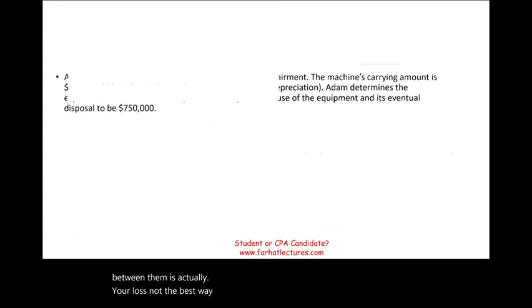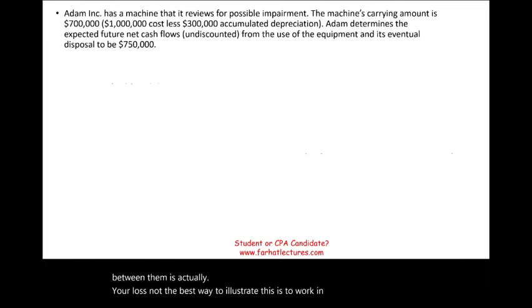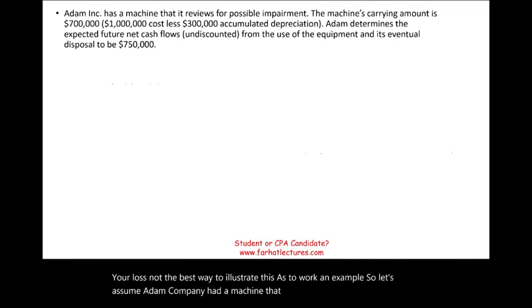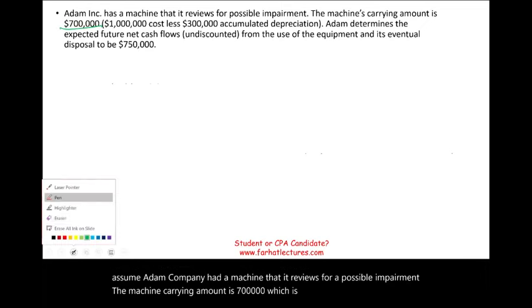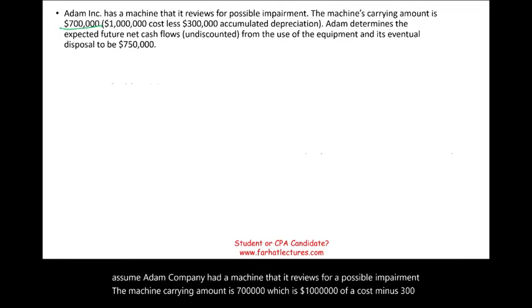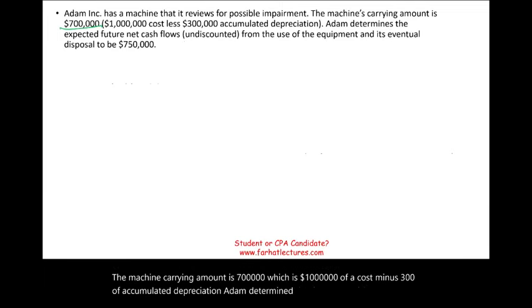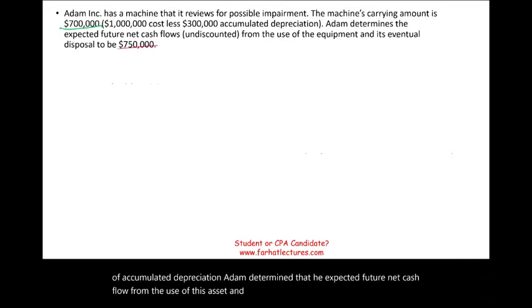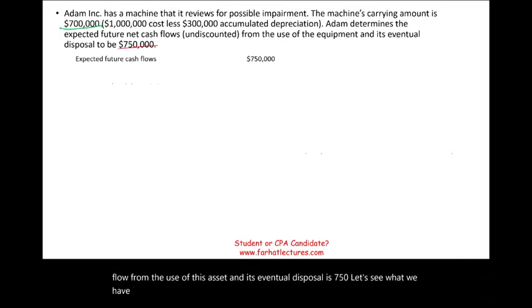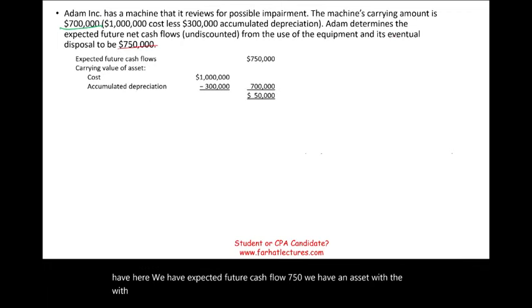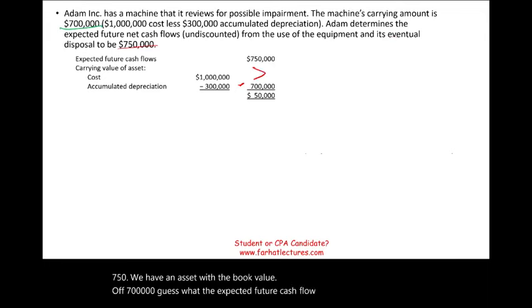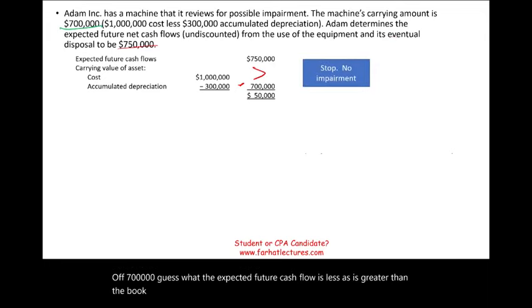Let's work an example. Atom Company has a machine with a carrying amount of $700,000 (cost of $1,000,000 minus $300,000 accumulated depreciation). The expected future net cash flows are $750,000. Since $750,000 is greater than the $700,000 book value, we stop — there is no impairment.